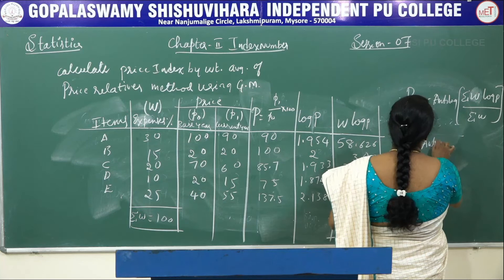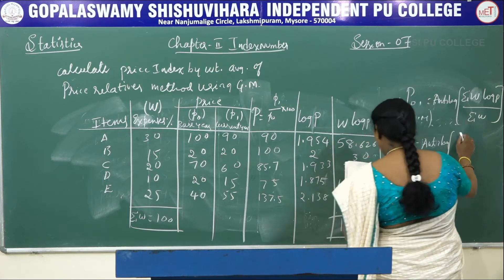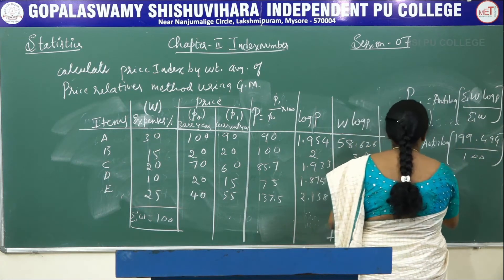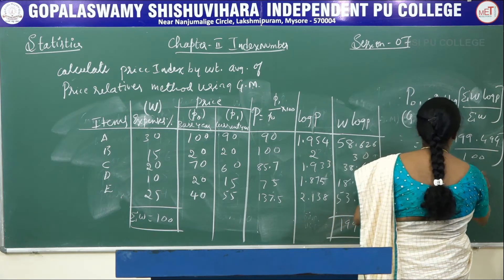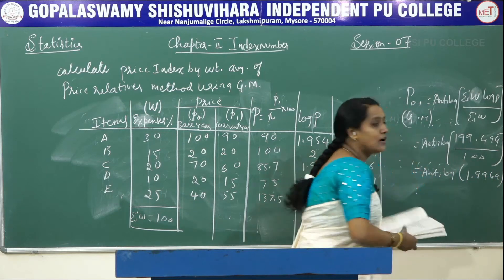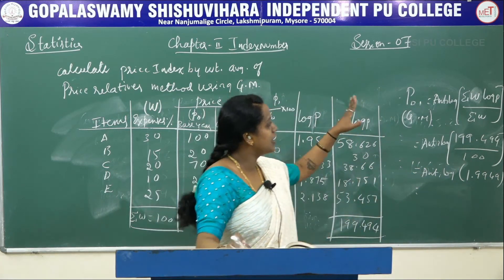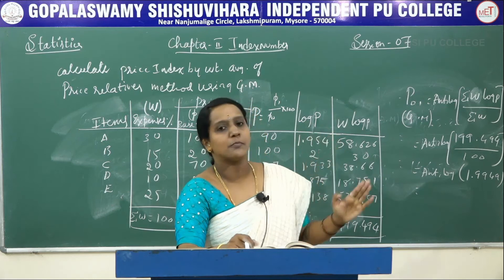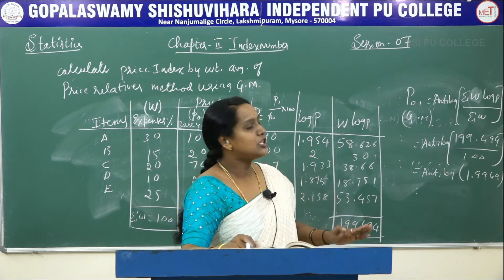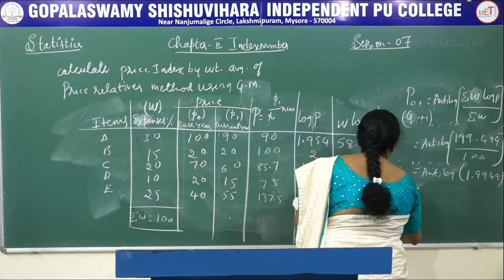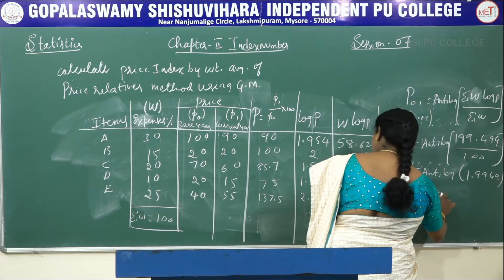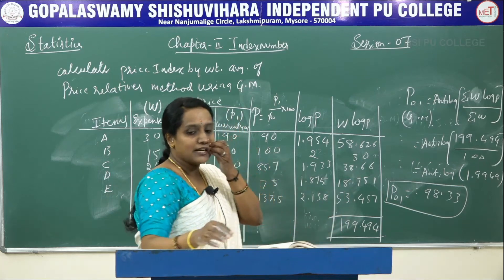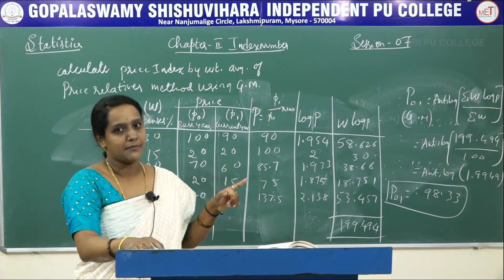So that it is anti-log of 199.494 divided by 100, which gives anti-log of 1.9949. First you have to divide summation W log P by summation W, then take the anti-log. So the price relative value using GM is 98.33. After finding the anti-log, you get the price relative value for GM as 98.33.